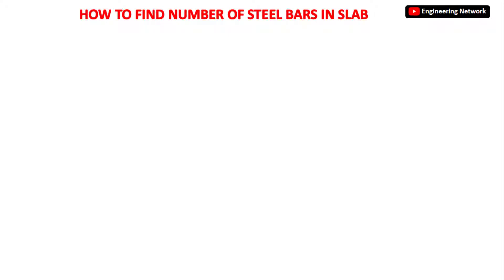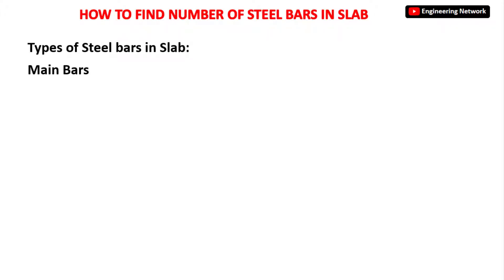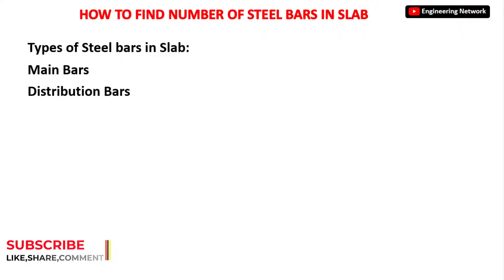So the topic for today's video lecture is how to find the number of steel bars in a slab. As you know, in a slab we use two types of steel bars: one is main bars and the second one is distribution bars. I will find the number of both main bars and distribution bars in the slab.